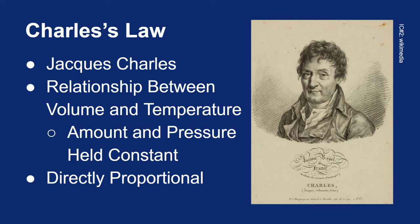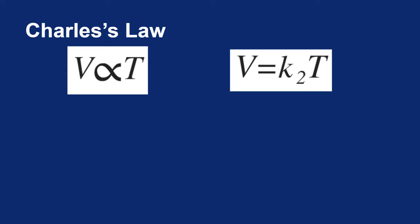Like with Boyle, let's take a look at this mathematically. The mathematical statement is that volume is directly proportional to temperature. And as before, we can get rid of that proportionality by introducing a constant. We can say volume equals constant times temperature.